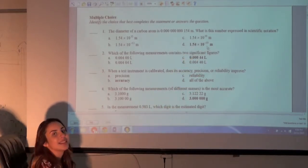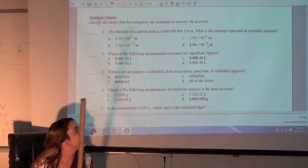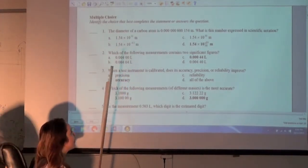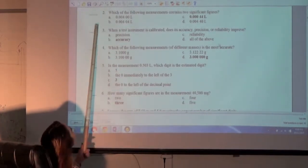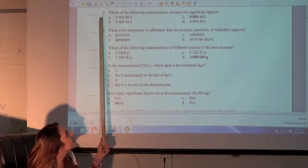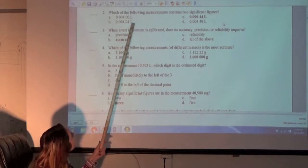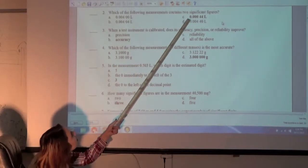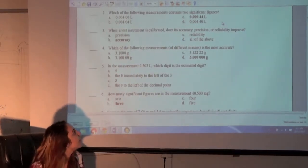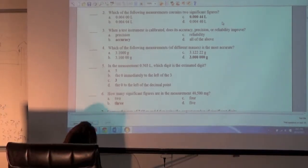I don't know how to read this. 10 to the minus 10 meters. Minus 10 meters. Which of the following measurements contains two significant figures? C, 0.00044 liters.